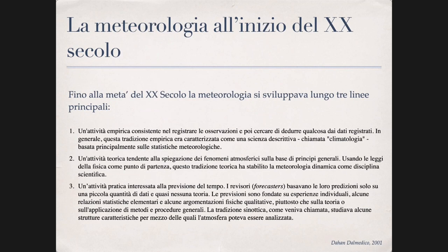There was an empirical activity that consisted of observing, recording, and registering the characteristics of the weather — observations and measurements — and then trying to deduce something from the registered data. This was an empirical tradition characterized as a descriptive science, which was often called climatology, and that was based on the statistics of these observations.